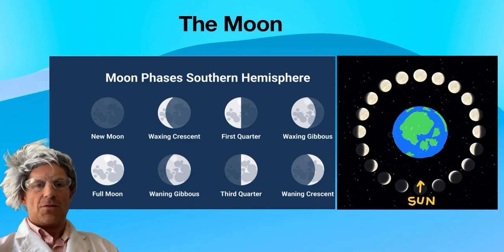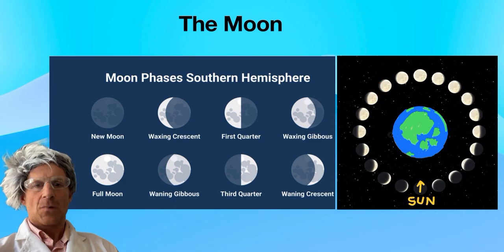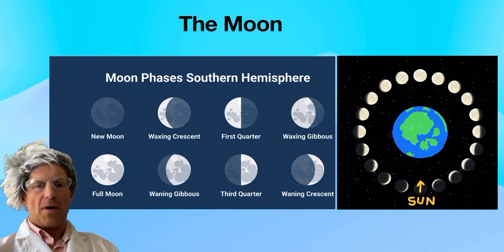Now we move on to the waning or the moon getting smaller with gibbous which is over here.